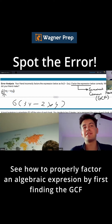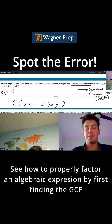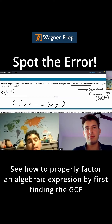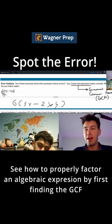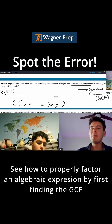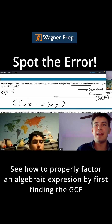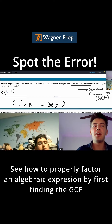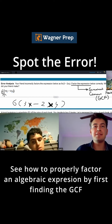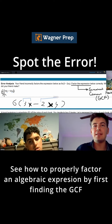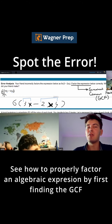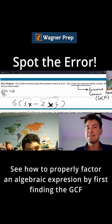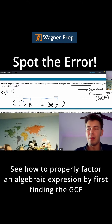Why did you say 6 is your greatest common factor? 6, as you see here, goes into 18 perfectly. But it also goes into 12, right? You have an x here and an x here. Those go into both things — that goes into here and into here. The x fits perfectly into both of those parts, so we can bring our x out front as well.